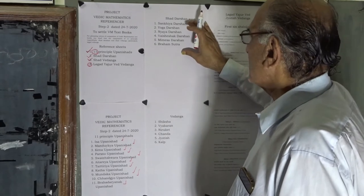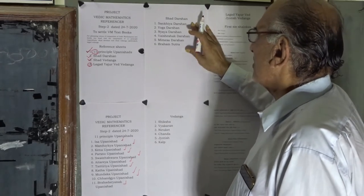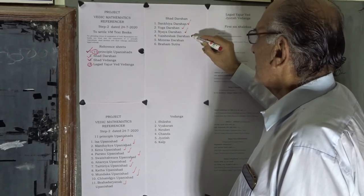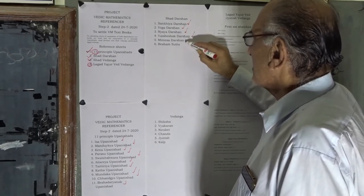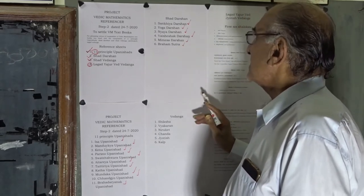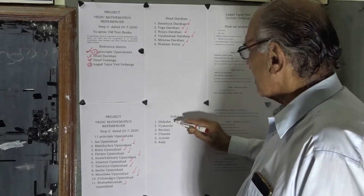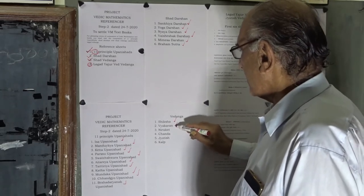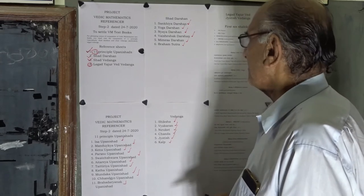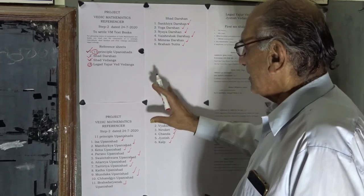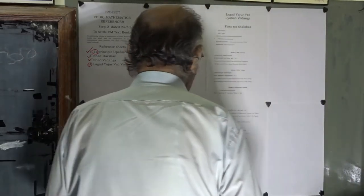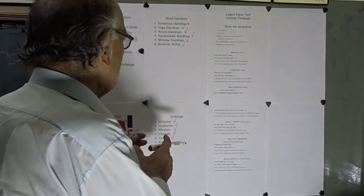The six schools of Indian philosophy — Shad Darshan — are: Sankhya Darshan, Yog Darshan, Niraya Darshan, Vishayashik Darshan, Mimansha Darshan, and Brahmsutra Vedanta. The six Vedangas are: Shiksha, Vyakaran, Nirukta, Chandas, Jyotish, and Kalp.